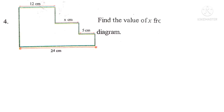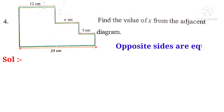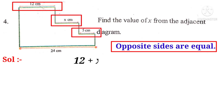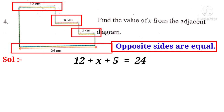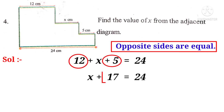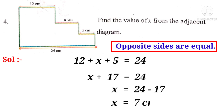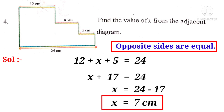Now, fourth problem. Find the value of x from the adjacent diagram. Solution. Here, the principle is that opposite sides are equal. Observe that 12 cm + x cm + 5 cm — the sum of these three sides — is equal to the fourth side, which is 24 cm. So, it can be written as x + 17 = 24 because 12 + 5 = 17. Therefore, x = 24 - 17 = 7 cm. So, the unknown value x is equal to 7 centimeters.